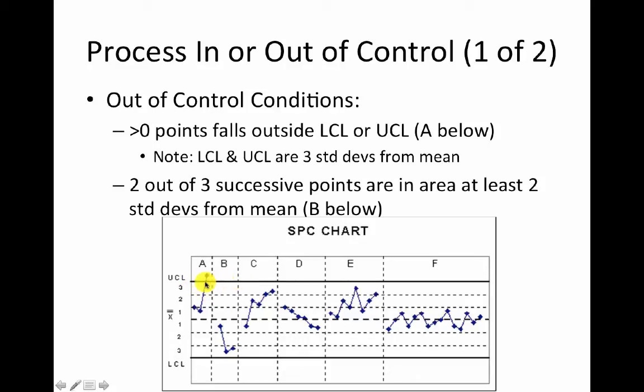And then we go all the way down here to the lower control limit, which is this solid line, three standard deviations below the mean. So here in A, you can see this is an example where it's out of control because this one point is outside of this control limit. If there's any point outside of that, all it takes is one, then the process is out of control.